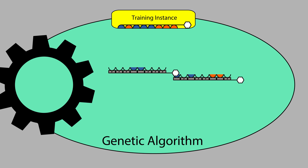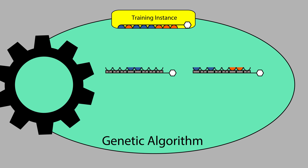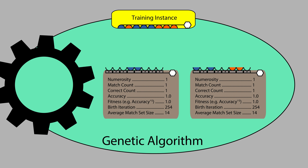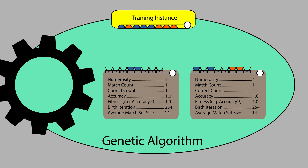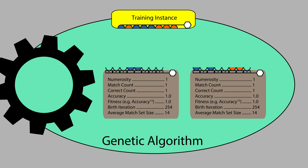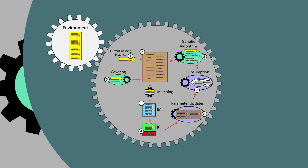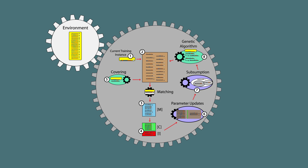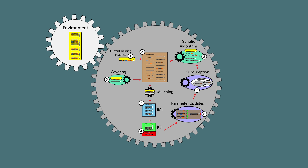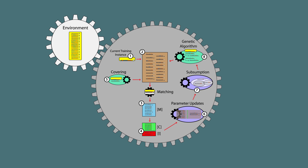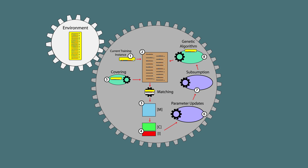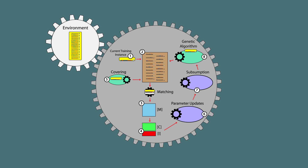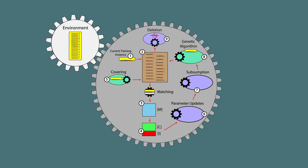Before adding the offspring rules to the population, their rule parameters are initialized to make them classifiers, and GA subsumption can be applied. At this point, any classifiers that have been involved in the learning cycle are returned to the rule population. The last step is to enforce the limited size of the rule population using deletion.